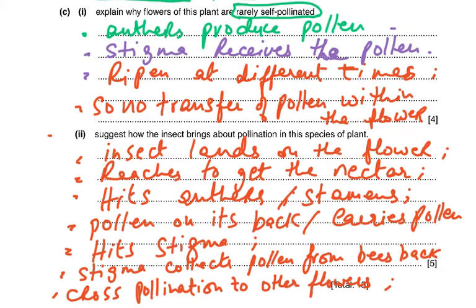Wherever the pollen is received by a mature stigma, pollination will result in fertilization and fruit formation. Insects will transfer pollen from one flower to another — some pollen may be wasted on immature stigmas, but where the stigma is mature, the pollen tube will grow and fertilization and fruit formation will take place.